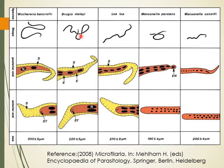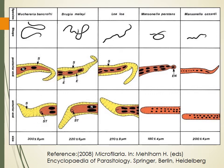Loa loa, W. bancrofti, and Brugia malayi are sheathed microfilariae — the yellow color seen around them is the sheath — while Mansonella is unsheathed. By looking at the cephalic space, the tail portion, and the arrangement of nuclei in the tail, you can differentiate these worms. W. bancrofti and Brugia malayi are the two species causing lymphatic filariasis, so differentiating between them is important, and this is easily done by examining microfilaria morphology.